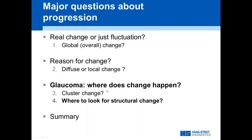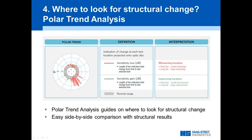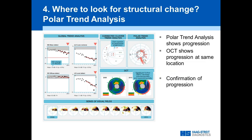Corresponding to the polar analysis, we have the polar trend analysis, which with red bars shows worsening in the series. It answers the question: where should I look for structural progression? Here is a clearly progressing partial arcuate defect on the superior side. The polar trend analysis says: check for structural progression supratemporally and infratemporally — and that's exactly where we find it in the structural data over the years.